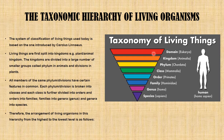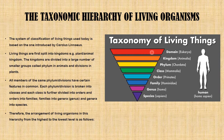Moving along, we will look at the taxonomic hierarchy of living organisms. The system used today is based on the one introduced by Carl Linnaeus. Living things are first split into kingdoms. The most inclusive level is the domain, followed by kingdom, phylum, class, order, family, genus, and species. The most specific is the species, and the least specific is the domain. The domain is the most inclusive and least specific, while the species is the least inclusive and most specific of the taxonomic hierarchy.